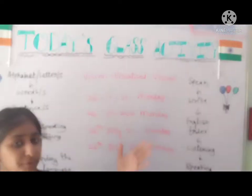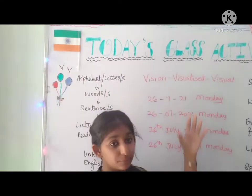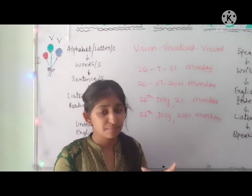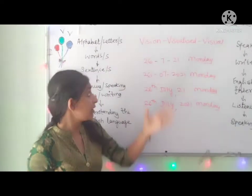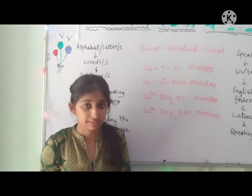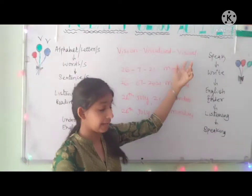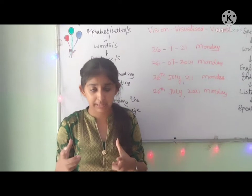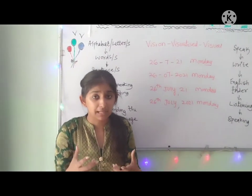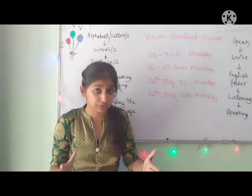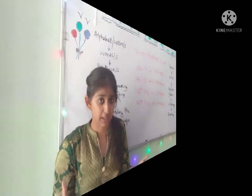Like vision, visualized, and visual. Vision means thinking about something in your mind. Visualized means seeing that in a practical way in your mind. Visual means seeing it visible with your eyes. Like a film writer — first he thinks about the story in his mind, that is vision. Then it goes to the producer and director who visualize it. And when the film is ready, you can see it with your eyes — that is visual. So you will think A is like this, B is like this — and after that you will visualize it, seeing B is like this, C is like this.